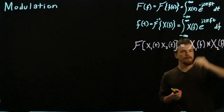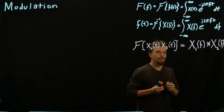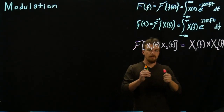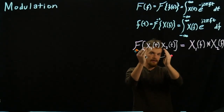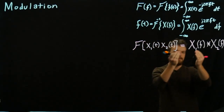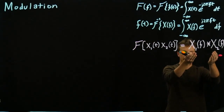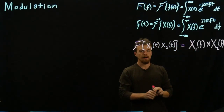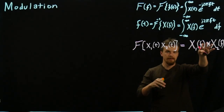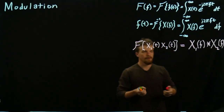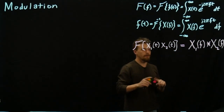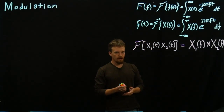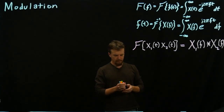So if we have two time functions and we know their expressions in both time and frequency, multiplying them in time is the same as convolving them in frequency. We're going to see how that's interesting and useful.